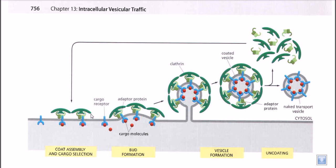The cargo proteins attach in the extracellular space, and the clathrin molecules bind in the cytosolic environment. Finally, this starts to pull the cell membrane outward slightly, and eventually makes a pinch through the membrane, forming a bulge structure, and then a vesicle structure, creating increasing strain.